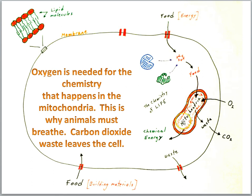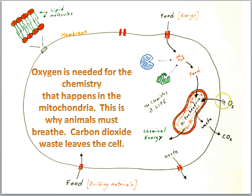The chemistry that goes on in mitochondria requires oxygen. Here we see oxygen moving right through the cell membrane. Oxygen is a small molecule, so it can go right through the lipid membrane and into the mitochondria. Actually, oxygen has to pass through two sets of membranes — the outer cell membrane and then the membranes of the mitochondria.